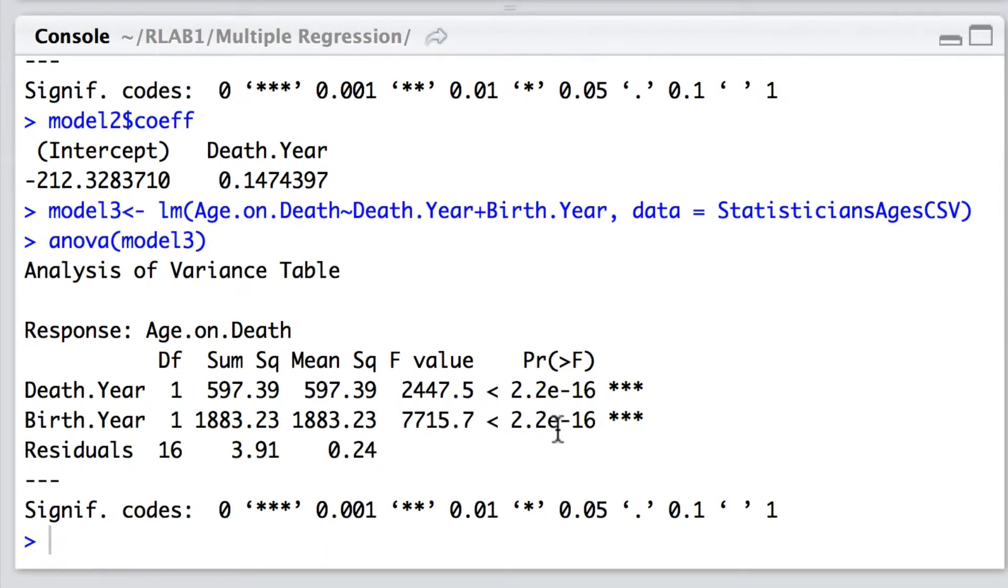We have to bear in mind that with a type 1 sum of squares we are controlling for the effects of other predictors above it in the list. And so here when we are looking at the effect of birth year on the age of death we are controlling for death year. So the birth year does indeed have a relationship on the age of death once we can control for death year. You'll note also that the significance of death year has improved considerably.